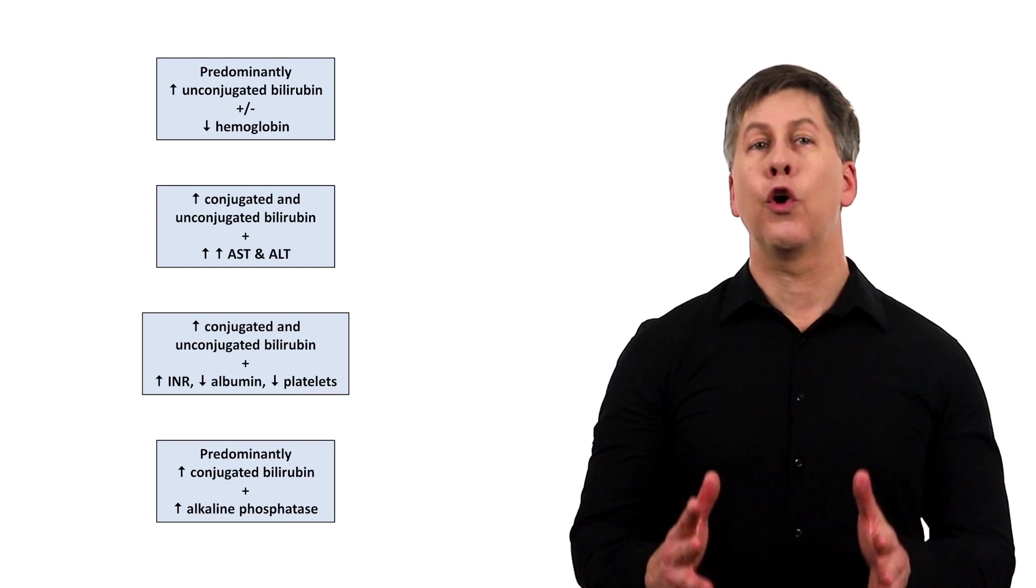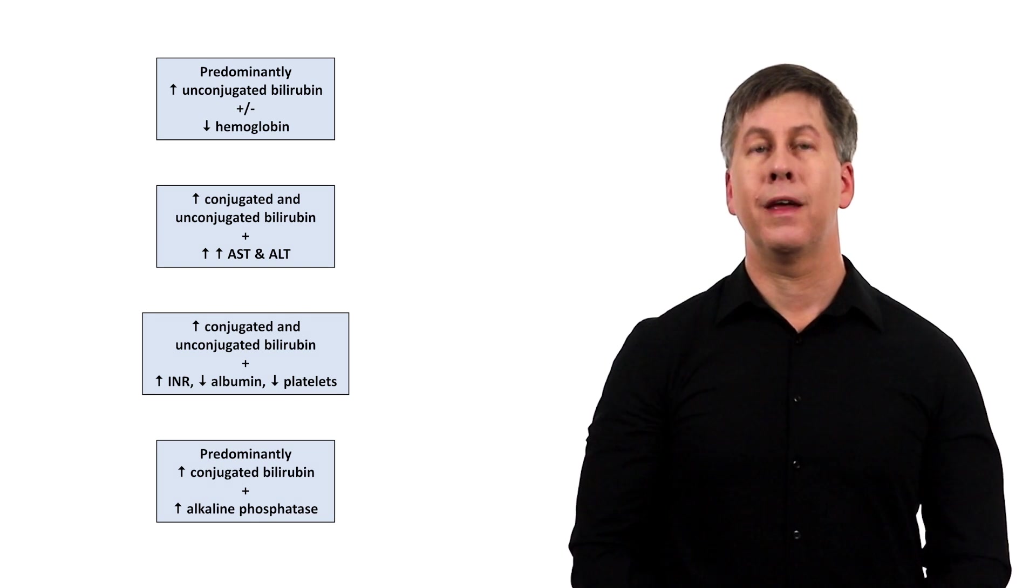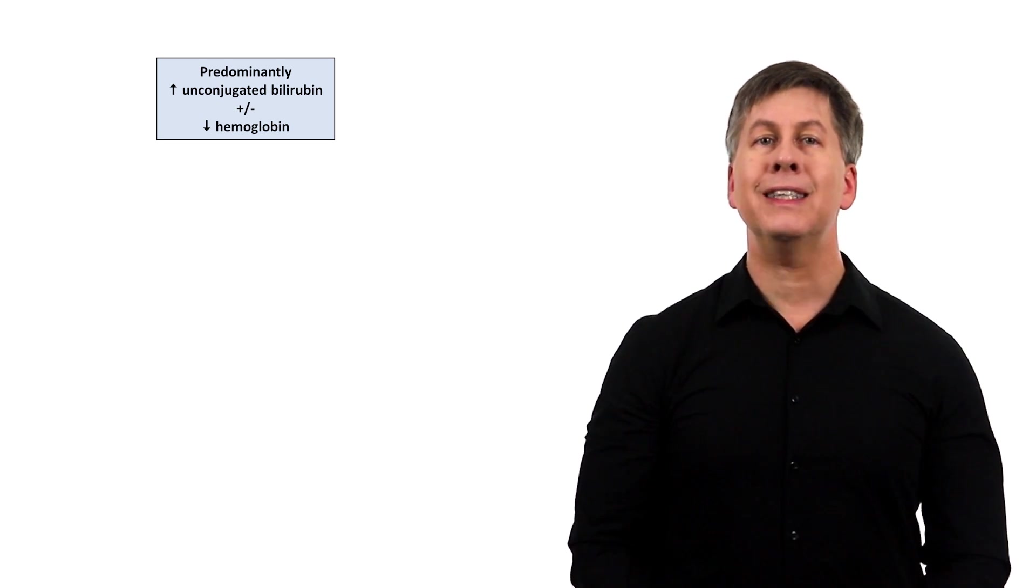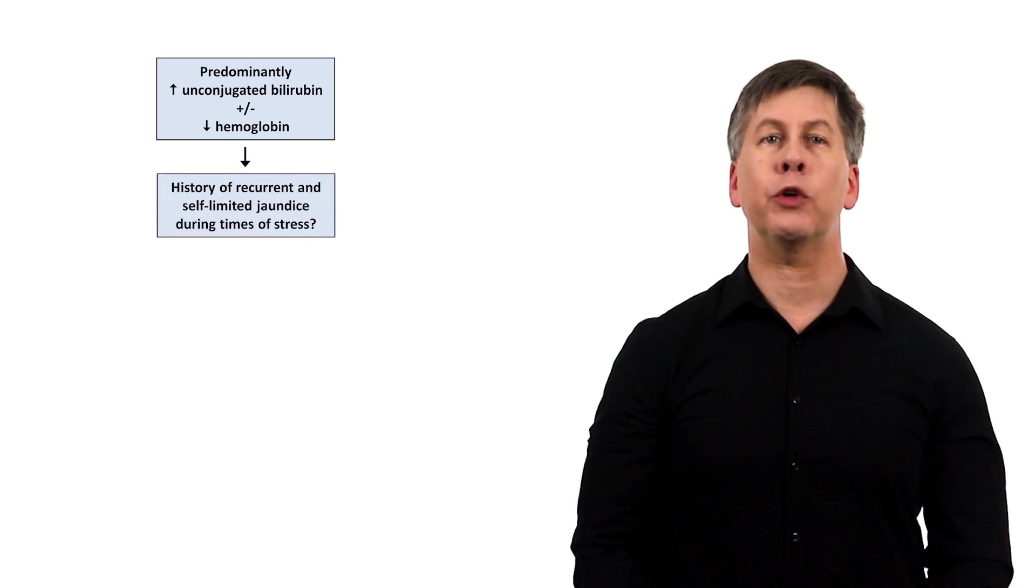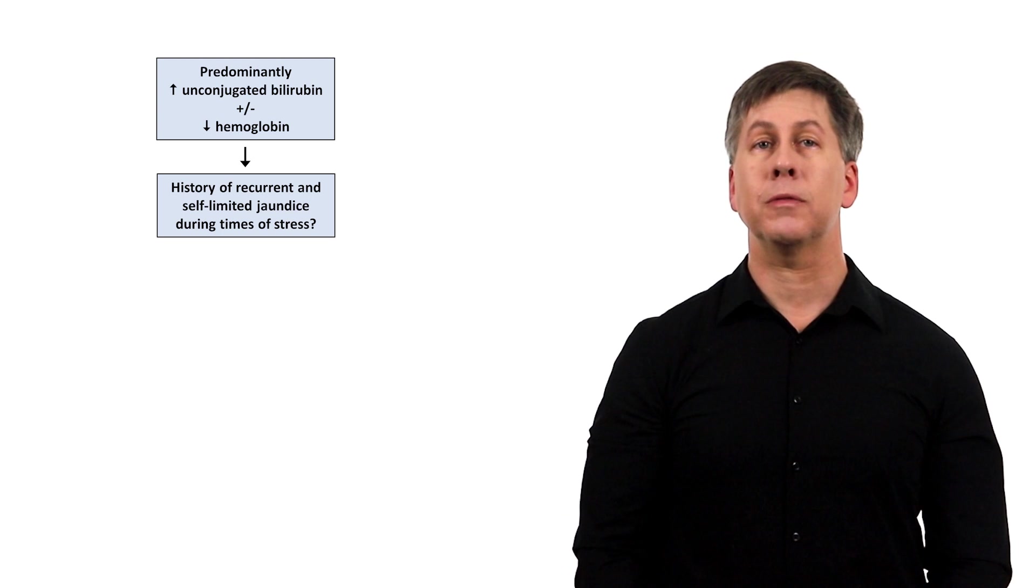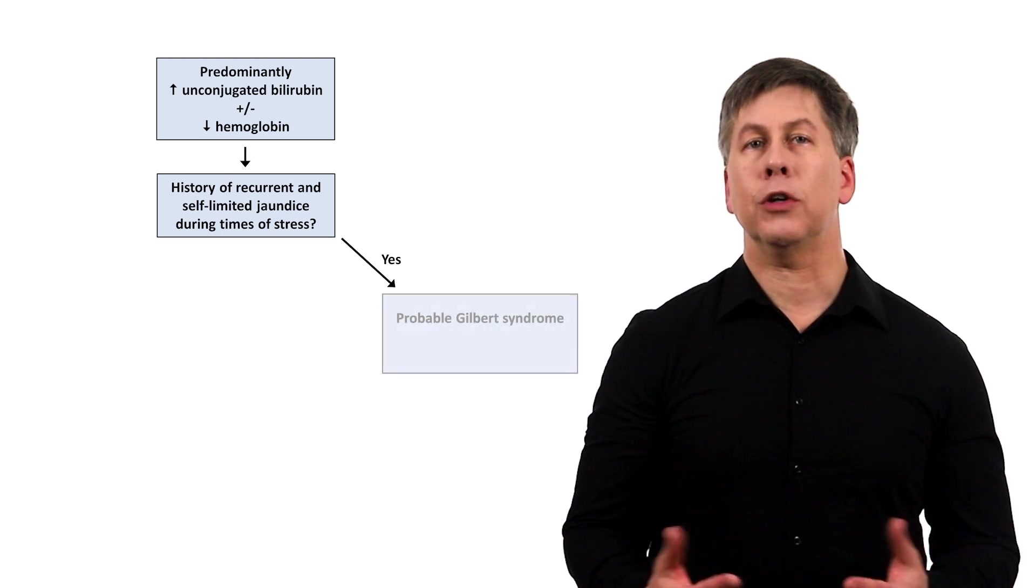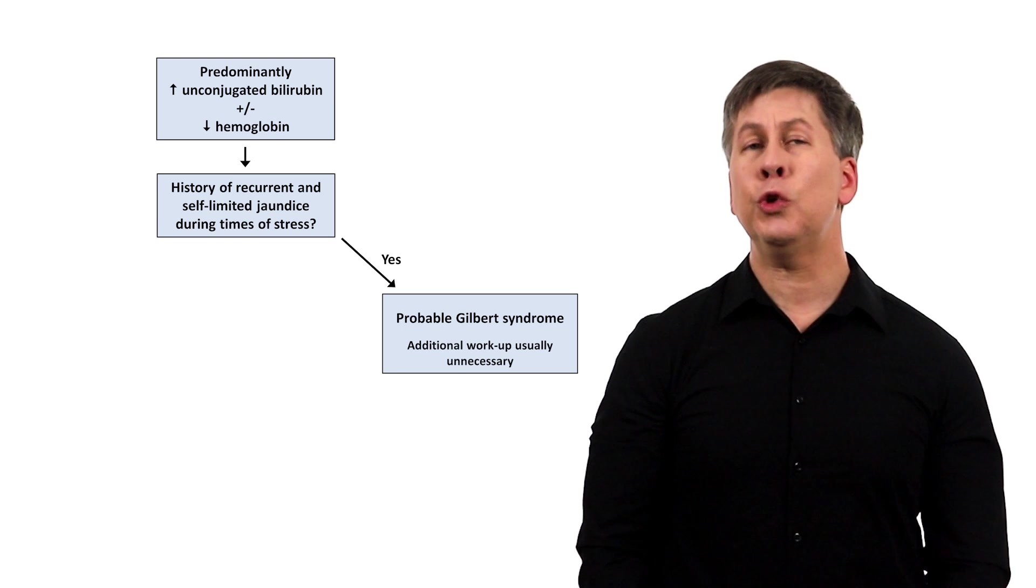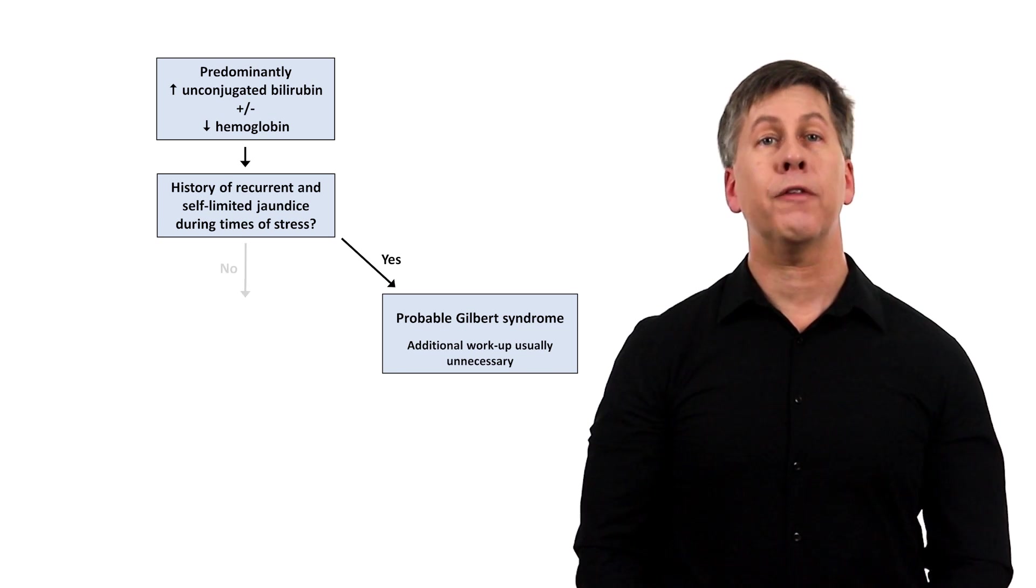Let's go through the next steps for each pattern. In the first scenario, consider whether the patient has a history of recurrent and self-limited jaundice during times of stress. If so, it's probably Gilbert syndrome, and additional workup is usually not necessary.